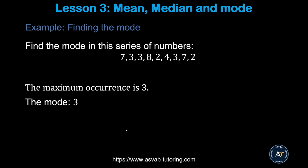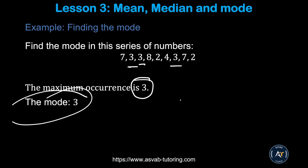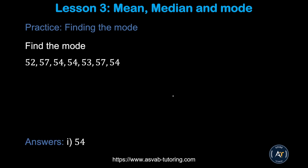The next thing is finding the Mode. The mode is the number that occurs the most in a set. You look at which number appears most frequently. In this example, 3 appears the most, so 3 is the mode. Make sure you know this concept — they sometimes ask this type of question on the officer candidate test. There is another practice problem; try by yourself and make sure you get 54.